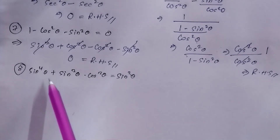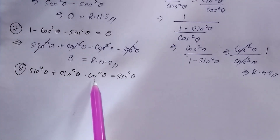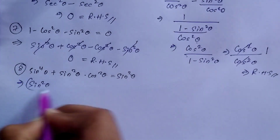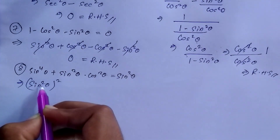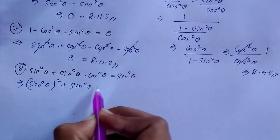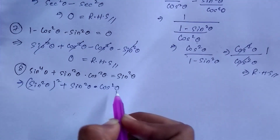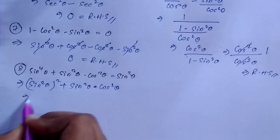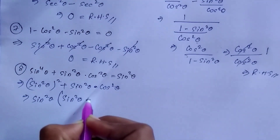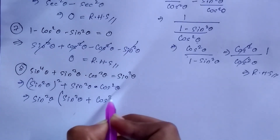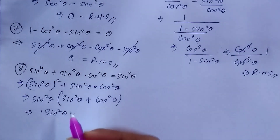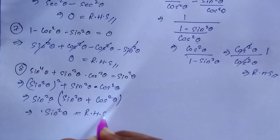Question number 8: prove that sin⁴θ + sin²θ · cos²θ = sin²θ. We write sin⁴θ as (sin²θ)². So it becomes (sin²θ)² + sin²θ · cos²θ. We can take sin²θ common: sin²θ(sin²θ + cos²θ). We know sin²θ + cos²θ = 1, so it becomes sin²θ · 1 = sin²θ, which equals your RHS. Hence proved.